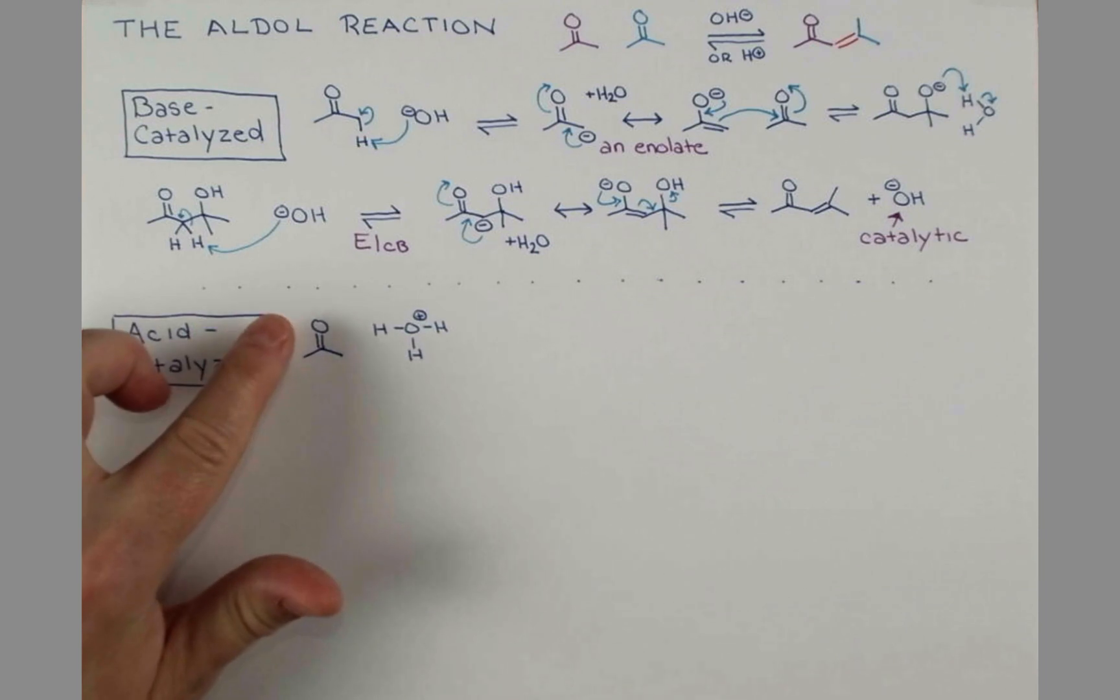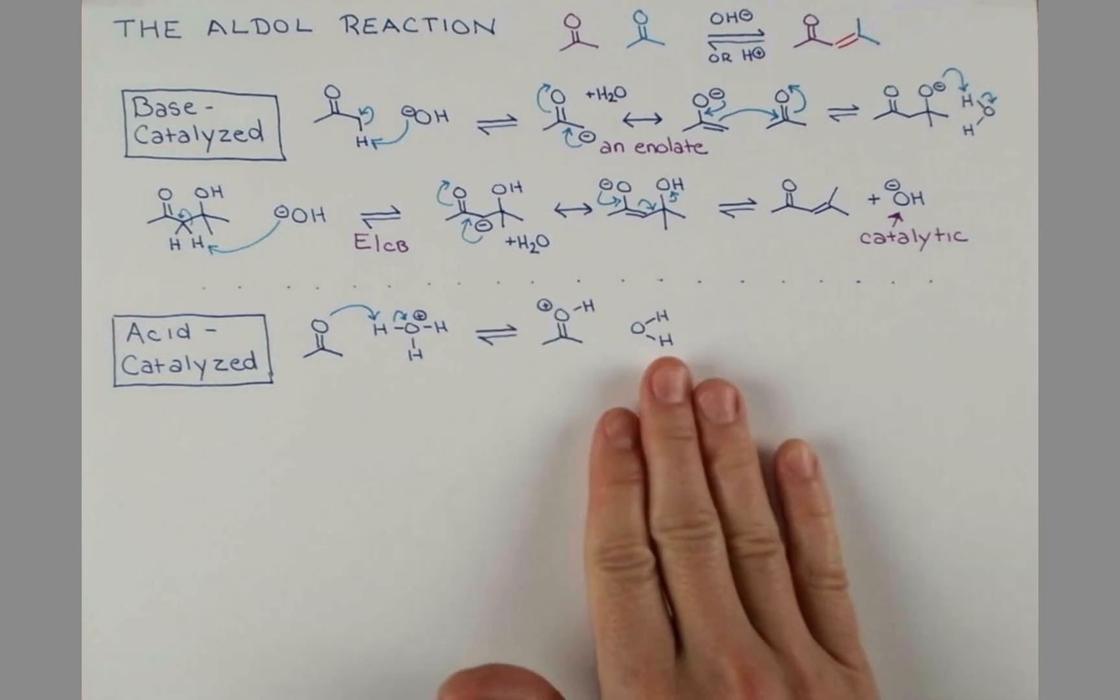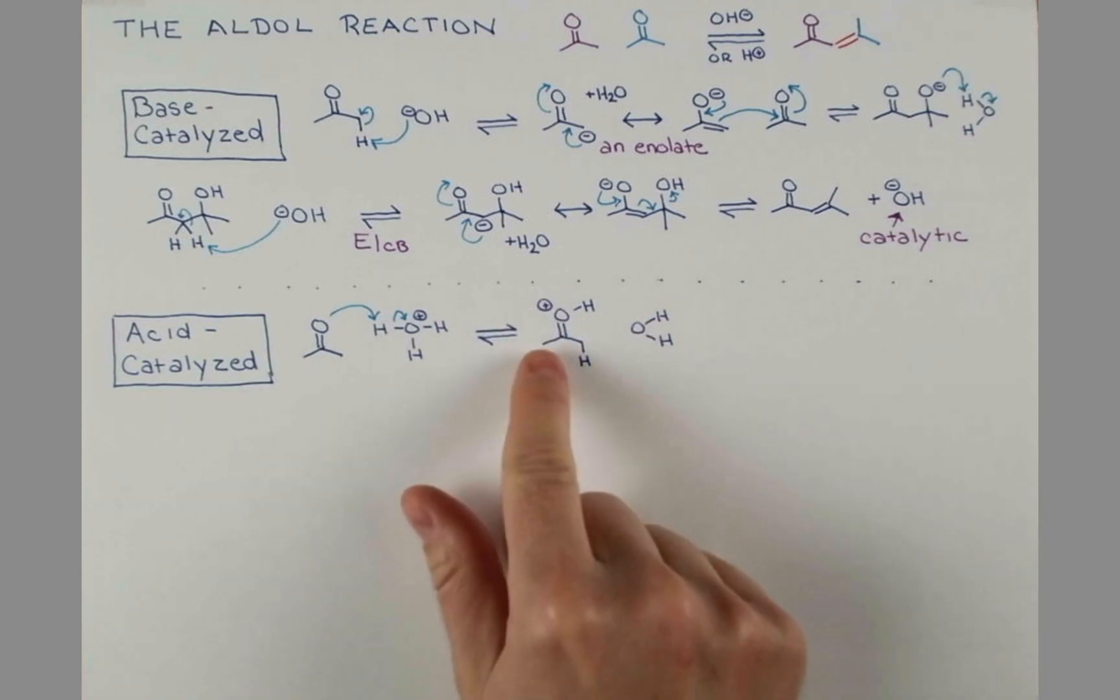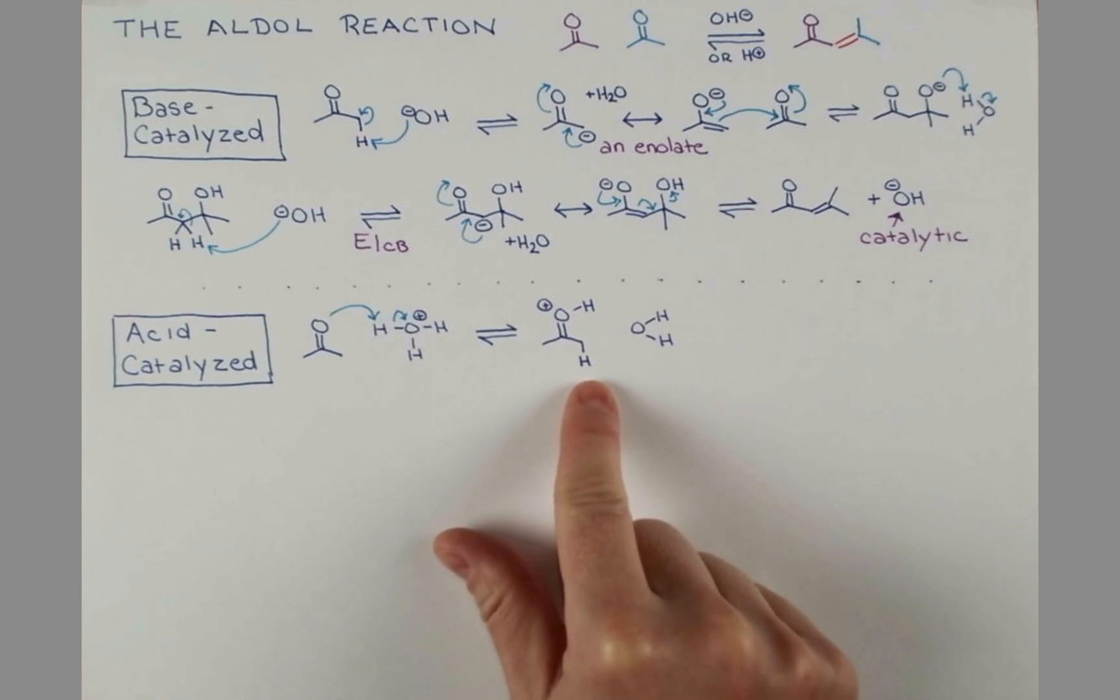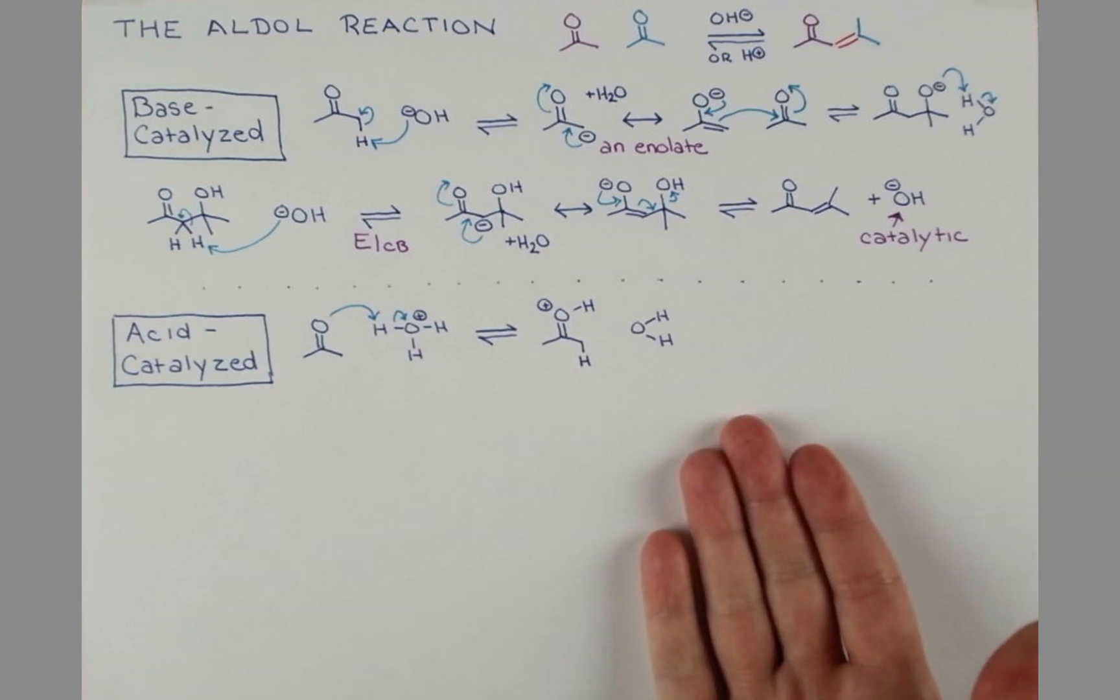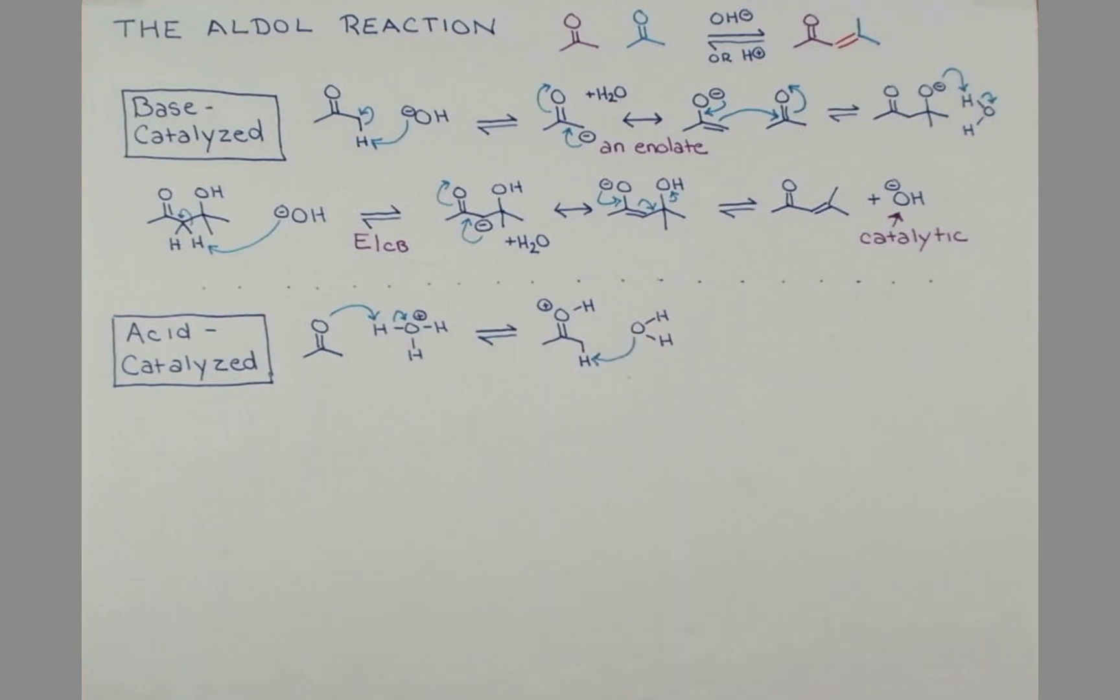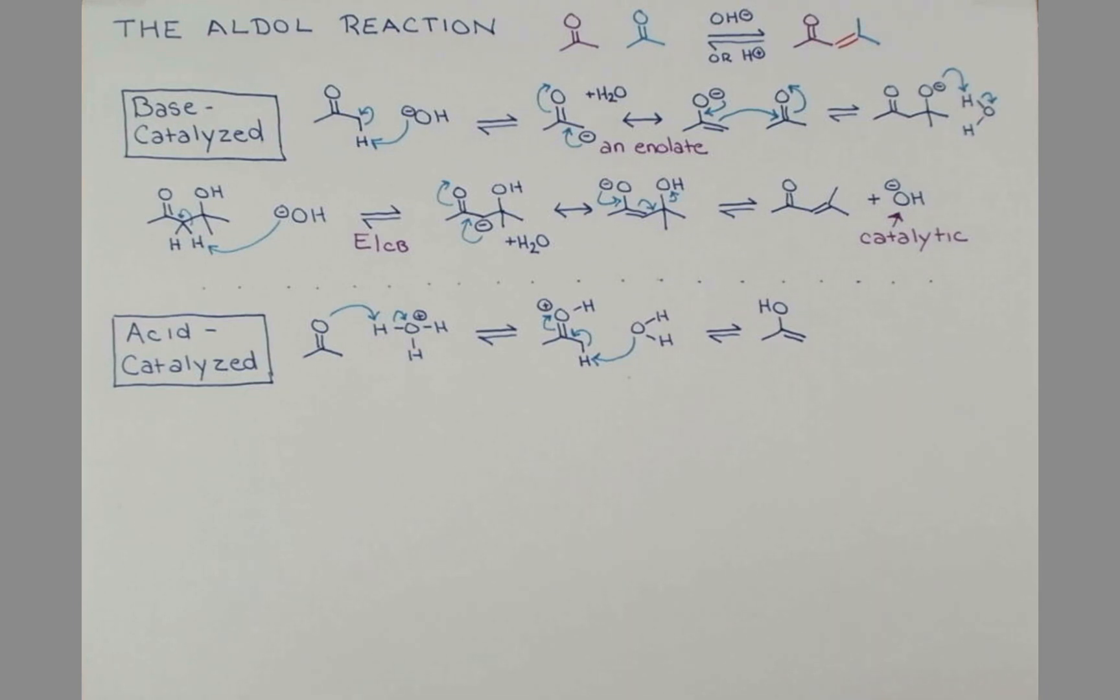The arrow pushing looks like this and gives an oxonium ion intermediate and a molecule of water. Now, with this protonated, we have a good resonance form that puts a carbocation right here inductively pulling electron density from this proton. So it is straightforward under acid-catalyzed conditions for water to do the deprotonation. And we can show arrows pushing toward oxygen, neutralizing that positive charge. So under acidic conditions, our reactive species is going to be this enol.